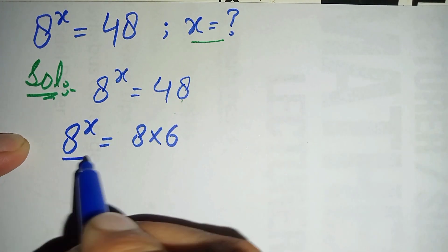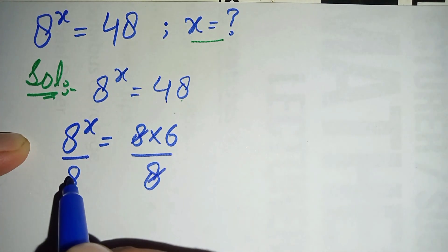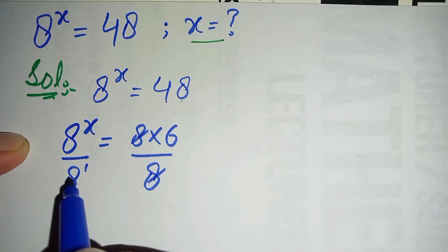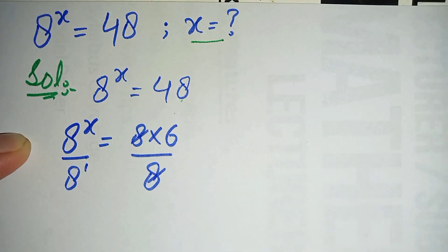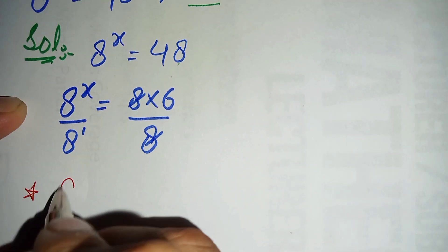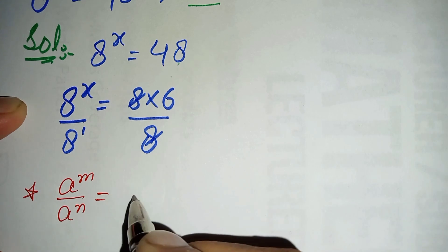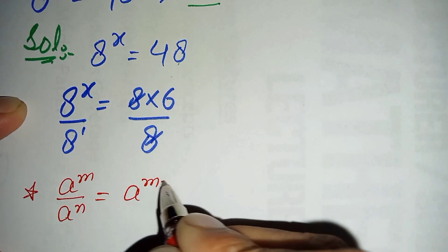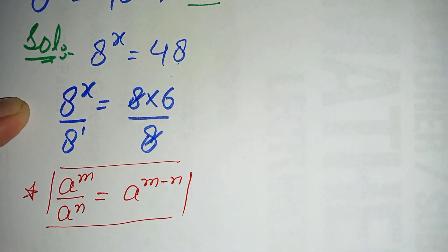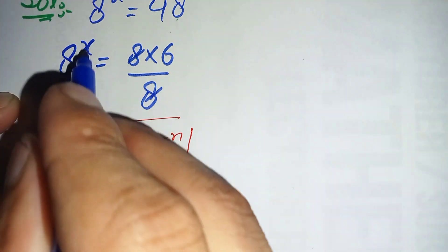Now we will divide both sides by 8. This 8 and this 8 will be cancelled — the power of 8 on the right is 1. On the left hand side, we use the exponential property: a^m divided by a^n equals a^(m−n). So the left hand side becomes 8 raised to power x minus 1.